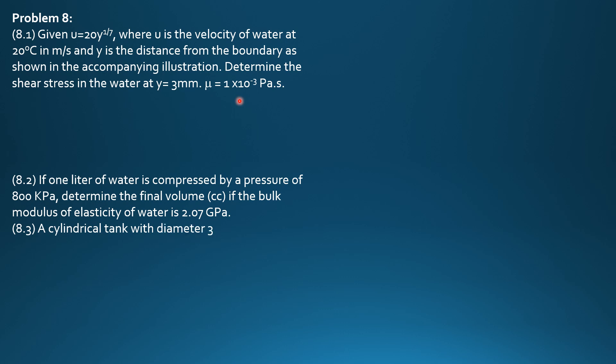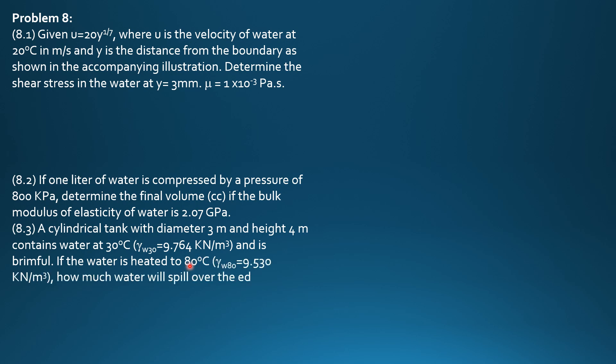Viscosity of water 1 times 10 to the negative 3 Pascal second. If 1 liter of water is compressed by a pressure of 800 kilopascals, determine the final volume in cubic centimeters if the bulk modulus of elasticity of water is 2.07 gigapascals.